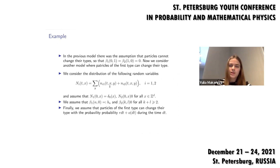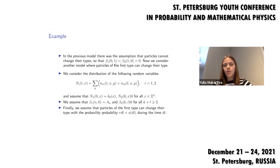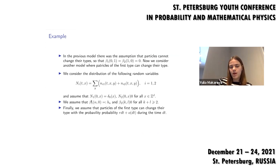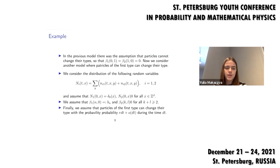As already mentioned, in the general model we assumed beta_1(0,1) = beta_2(1,0) = 0. Now we consider another model where particles of the first type can change their type. This is an example with applications: we call the first particles as infected — they can infect others — and the second type as immunity-generated. Particles of the first type can only produce particles of the first type, while particles of the second type cannot produce offspring of either type. We introduce intensity R, which denotes the rate at which particles of the first type change to the second type.